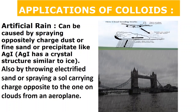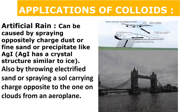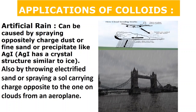Sometimes during a cricket match rain suddenly starts — very irritating! But humans have conquered this too. We can deviate clouds and cause rain wherever we want — this is called artificial rain. It can be caused by spraying oppositely charged dust, fine sand, or precipitates like AgI crystals, or by throwing electrified sand from an aeroplane carrying charge opposite to that on clouds. Since clouds are charged colloidal particles, adding opposite charge causes coagulation and the cloud falls down as rain.